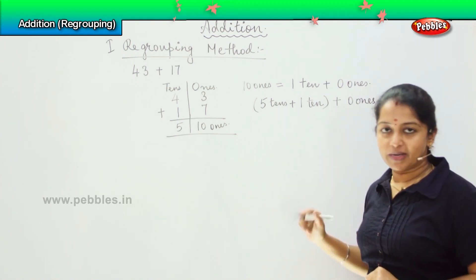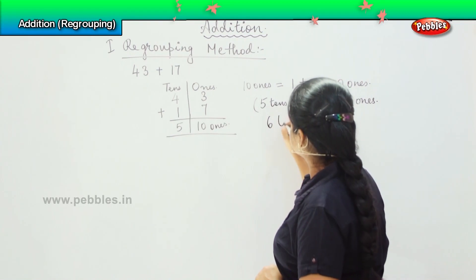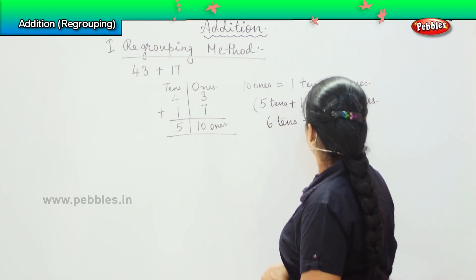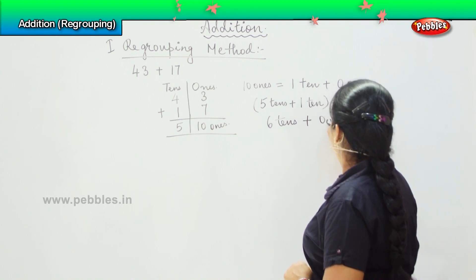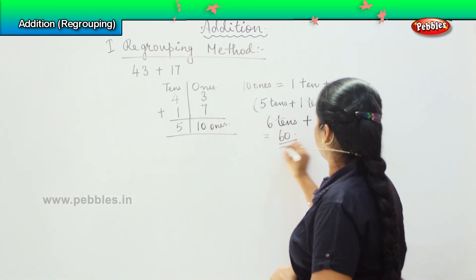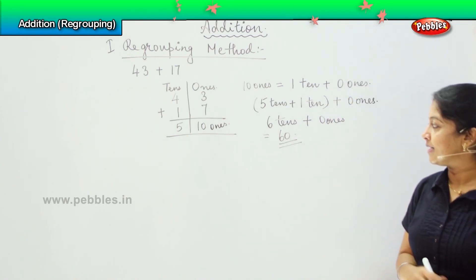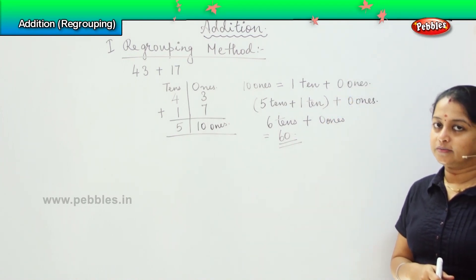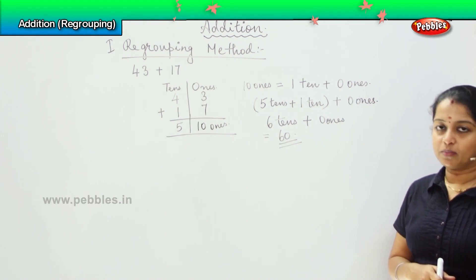So 5 plus 1 is how much? It is 6 tens plus 0 ones which is nothing but 60. So my answer is 60. Got it? Can we do one more?